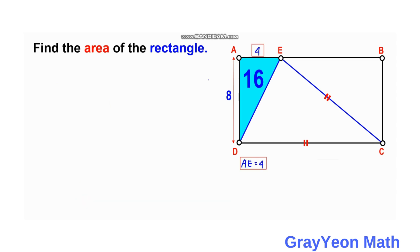Next, we let segment EB be X. The total length of this rectangle will be X plus 4, so DC will also be X plus 4, and segment BC will be 8. Since segment EC is equal to the side length of this rectangle, EC will be X plus 4.